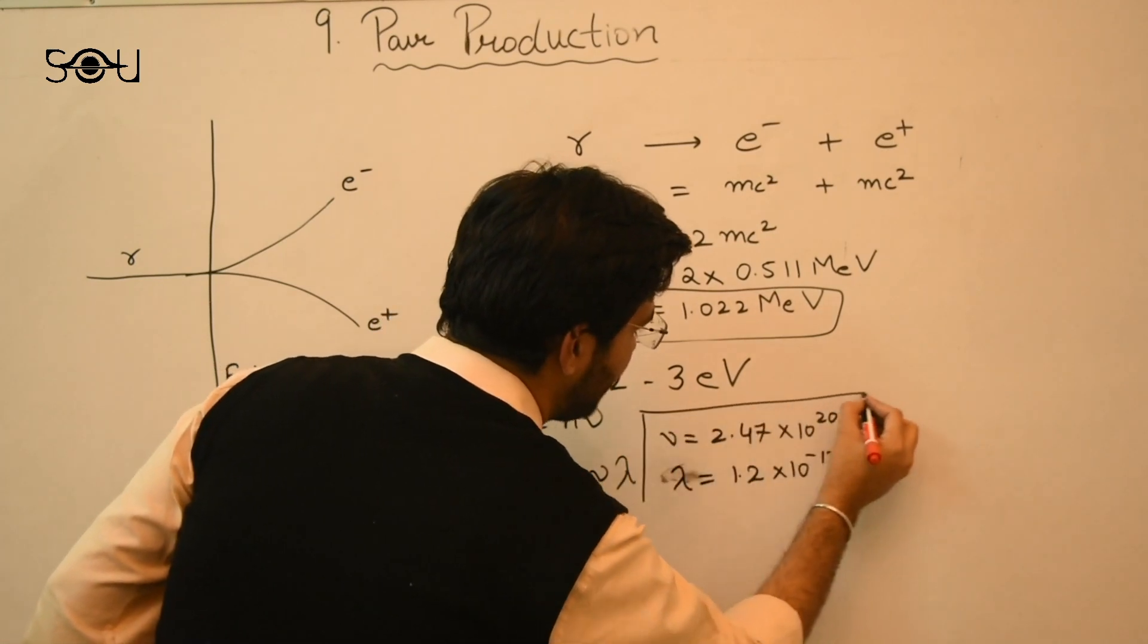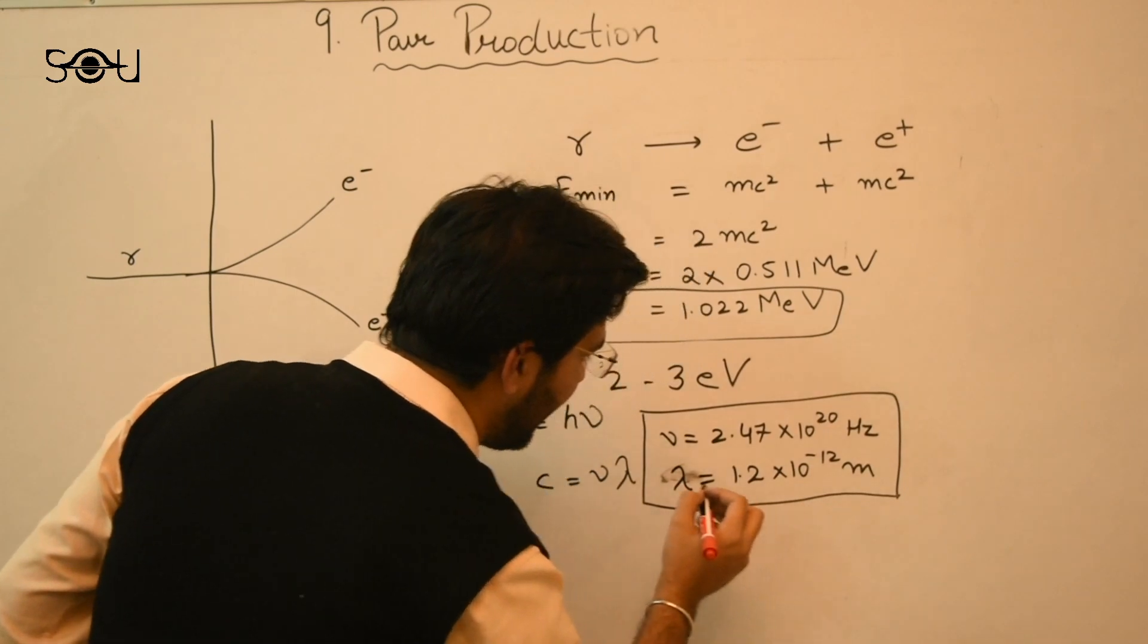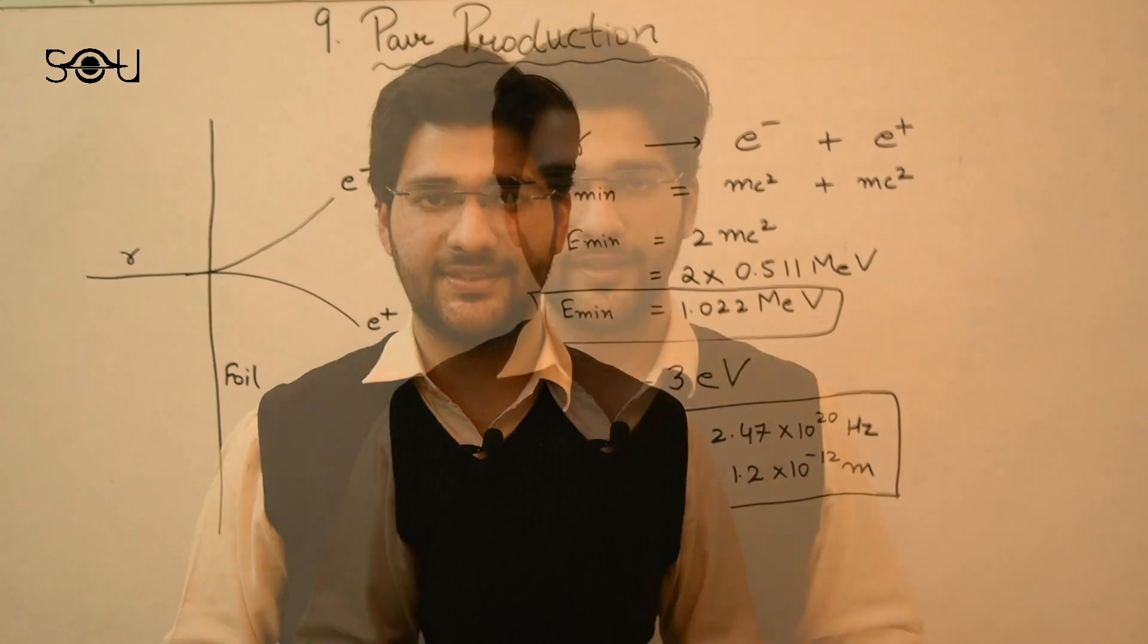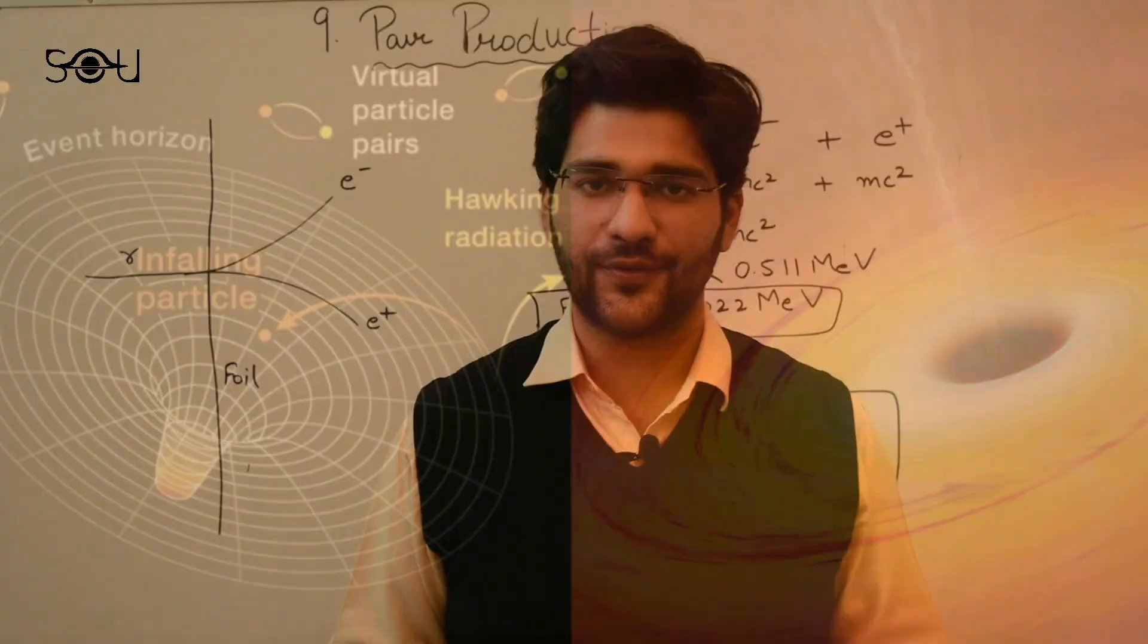So I have calculated the minimum energy, minimum wavelength and the frequency that is required for the pair production to take place. Now let's see where pair production comes into play in astrophysics.